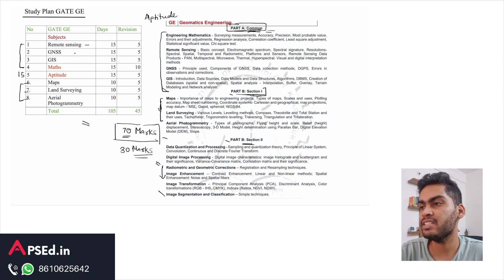So remote sensing, GNSS, GIS, and maths are the four topics. Aptitude you can combine it with maths or study it separately.